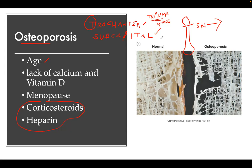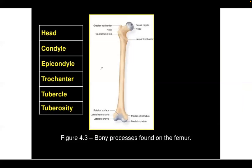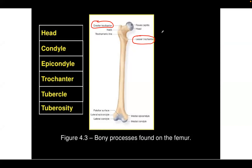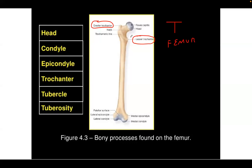The greater and lesser trochanters are found on the femur. The analog in the humerus is the tubercle or tuberosity. The head of the femur articulates with the acetabulum at the hip joint — a ball-and-socket joint. Hip dislocation is usually posterior. Shoulder dislocation is usually anterior. Elbow dislocation is usually posterior.